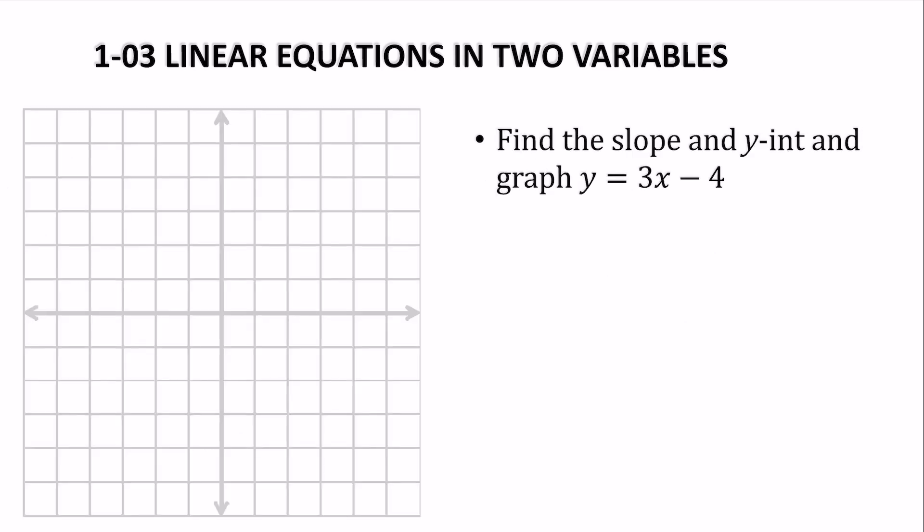Here's an equation of a line. Find the slope and the y-intercept, and then graph it. Well, if it's a line, it's y equals mx plus b, so m appears to be 3, so m, which is our slope, is 3, or 3 over 1. And the y-intercept, which is b, would be negative 4.